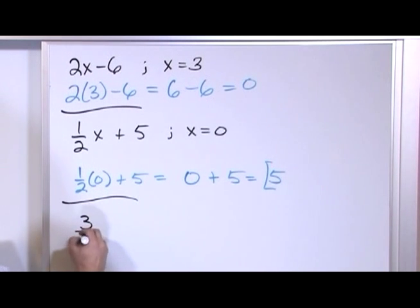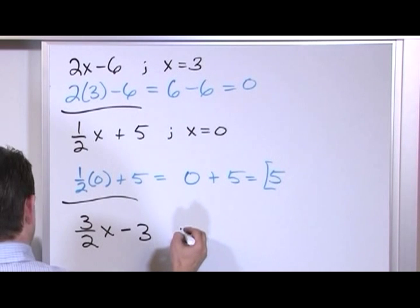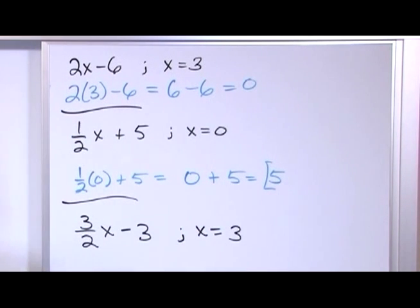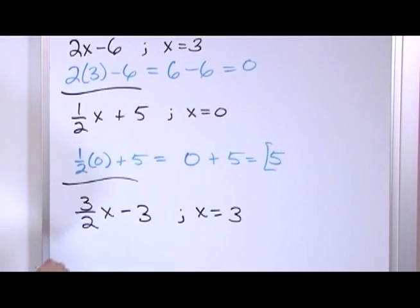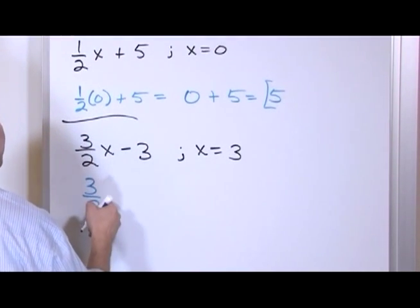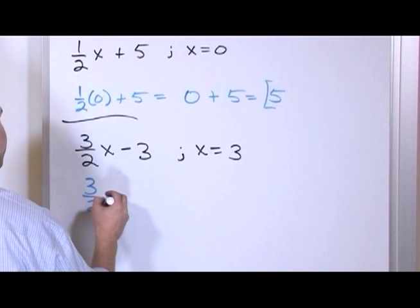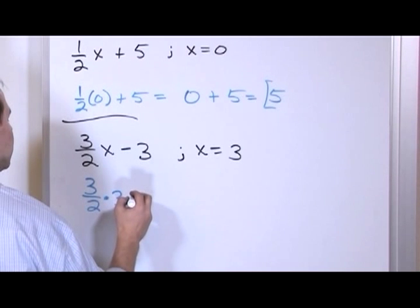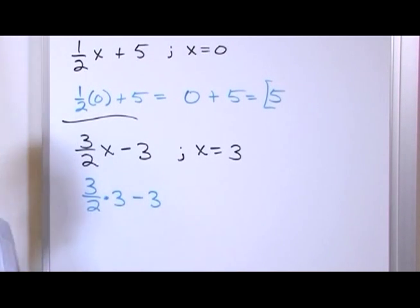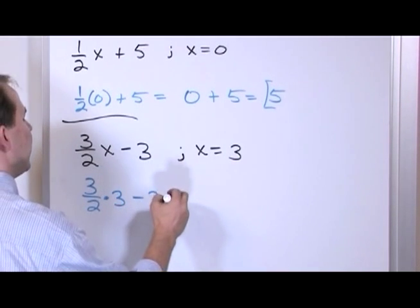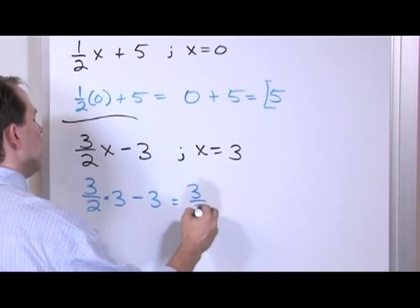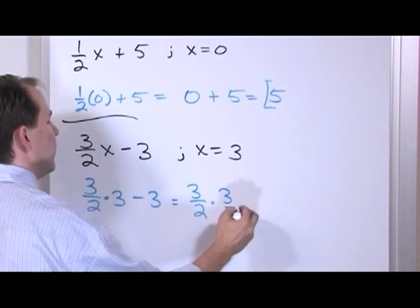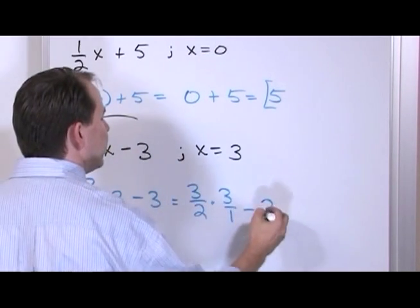What if I have 3 halves times x minus 3, where x is equal to 3? So I plug this in: 3 halves times 3, because x is equal to 3, minus 3. This is where you need to use your knowledge of fractions. You have 3 halves multiplied, and 3 can be written as 3 over 1.